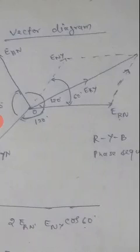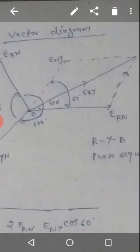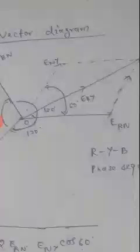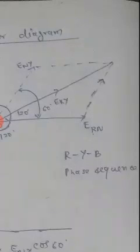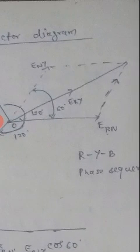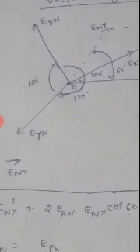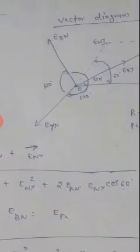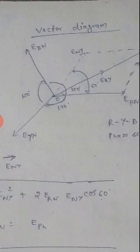Then we are having E_RN and E_NY. So construct the parallelogram, then draw the diagonal. Now this diagonal will be the resultant of the line voltage. So for that we are having the law of parallelogram of forces.